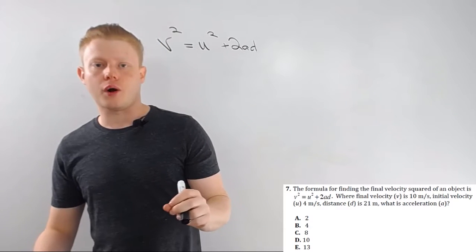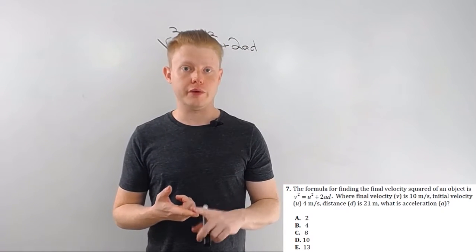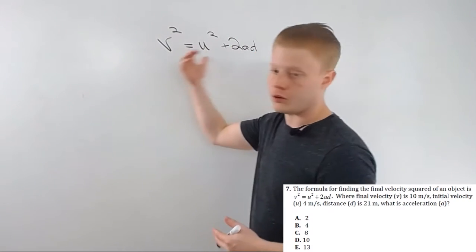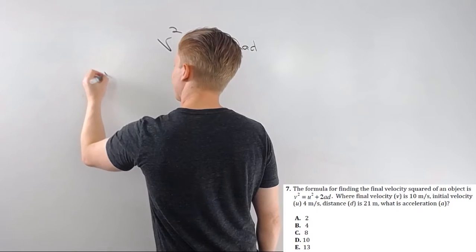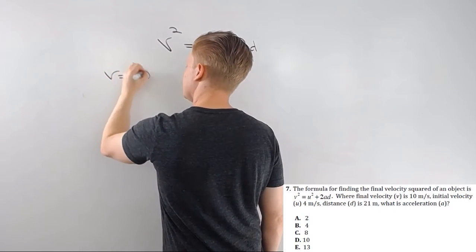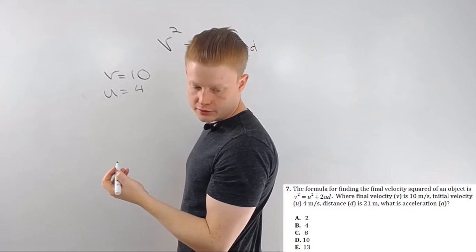When you do these problems, there's two keys. First, be very careful, be diligent, literally write down your equation. Then write down your list of knowns. So I have v is equal to 10, u is equal to 4, and d is equal to 21.